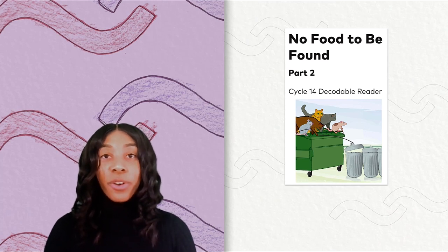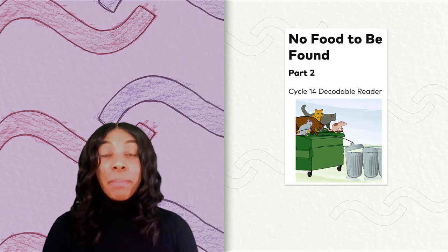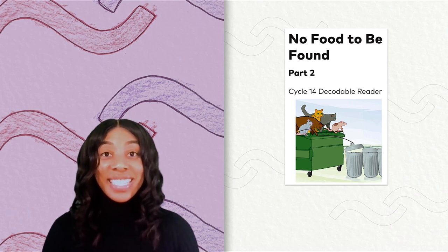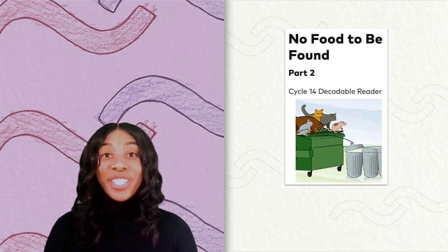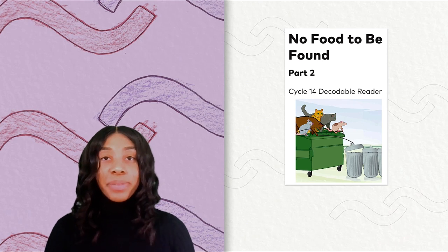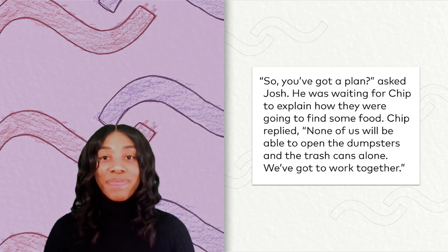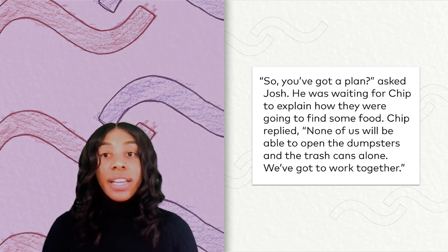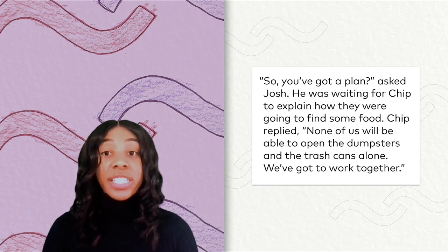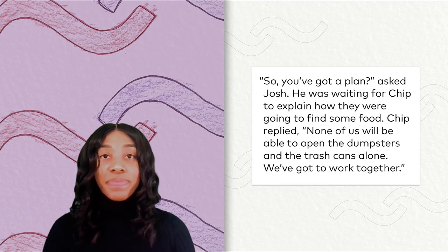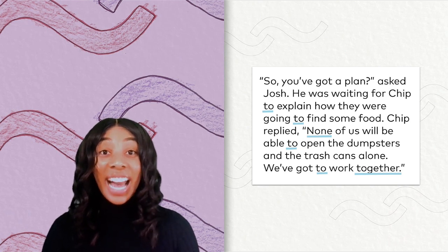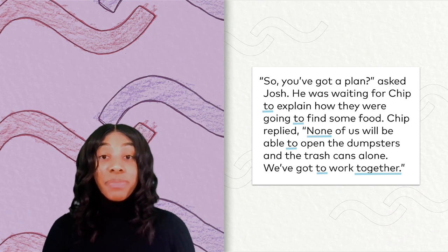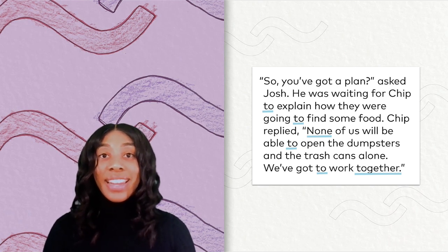Now we will start reading our decodable reader, No Food to be Found, Part 2. Before we start reading, we are going to be detectives and look for high-frequency words. Each time you hear a high-frequency word, I want you to jump. Ready? 'So, you've got a plan,' asked Josh. He was waiting for Chip to explain how they were going to find some food. Chip replied, 'None of us will be able to open the dumpsters and the trash cans alone. We've got to work together.' As you can see, we have six high-frequency words on this page — four words that say to, and also none and together.